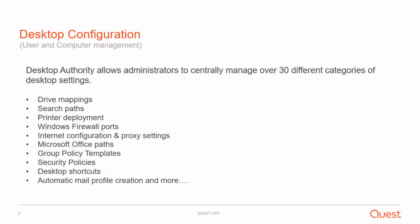Desktop Authority allows administrators to centrally manage over 30 different categories of desktop settings, including drive mapping, search paths, printer deployment, Windows firewall ports, internet configuration and proxy settings, Microsoft Office paths, service packs, group policy templates, security policies, desktop shortcuts, automatic mail profile creation, and much more.